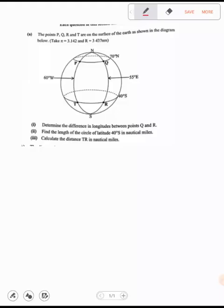Then it says, determine the difference in longitude between Q and R. Before you go anywhere, you first need to ask yourself, they are looking for the difference in what? In longitudes. So if they are looking for the difference in longitudes, you can clearly see that Q is there, and R is here.